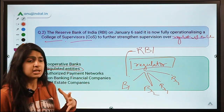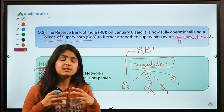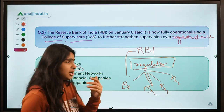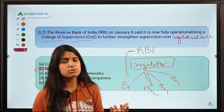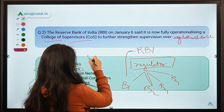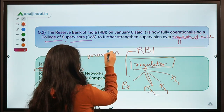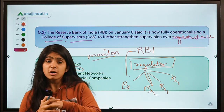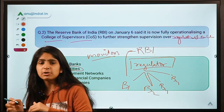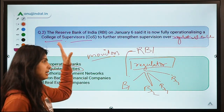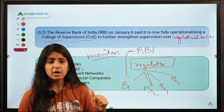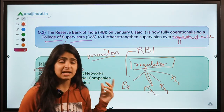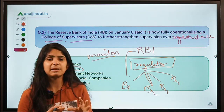To carry out this regulatory function more efficiently, RBI created a College of Supervisors to train its staff in supervising and monitoring activities. Like a teacher appointing monitors in a class and training them to maintain discipline — RBI wants its staff, who help carry out supervisory functions, to be better at their job.